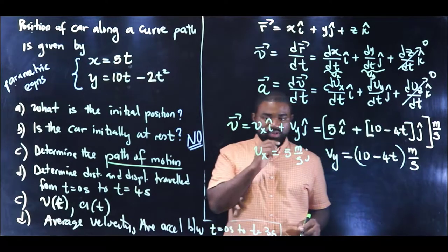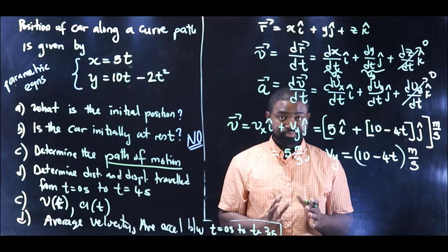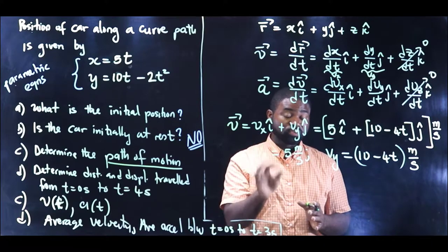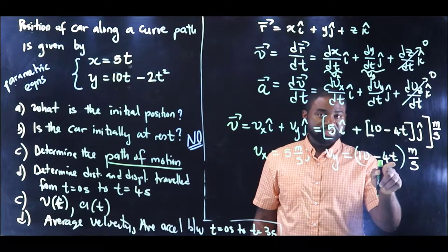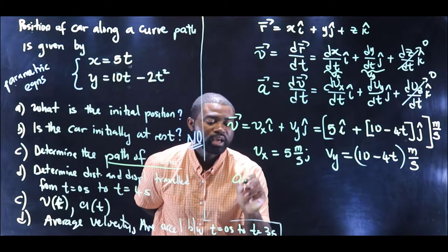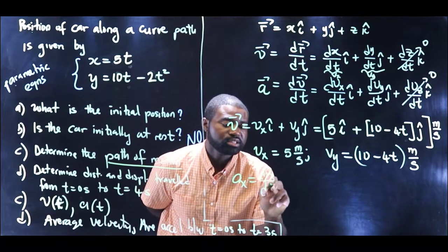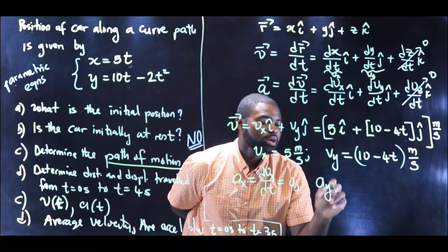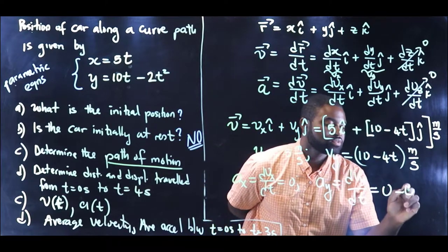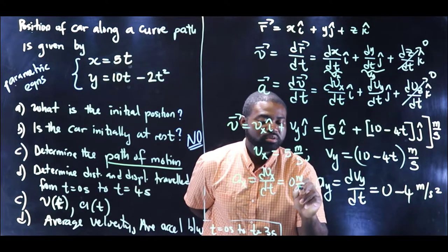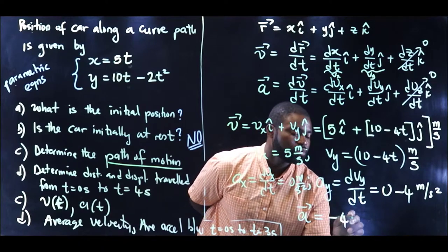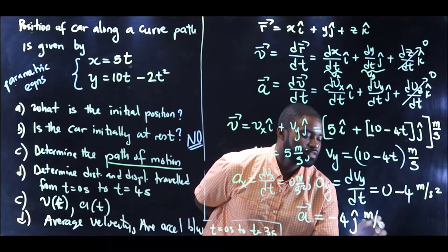What you need to take note here is that vx is just a number, meaning it's constant. If it's constant, therefore the acceleration in the x direction, ax, will be 0. vy is a function of t, meaning the acceleration in the y direction is not 0 but a constant. So ax = dvx/dt = 0, and ay = dvy/dt = 0 minus 4 = negative 4 meters per square second. Therefore, the acceleration a will be equal to negative 4j meters per square second.